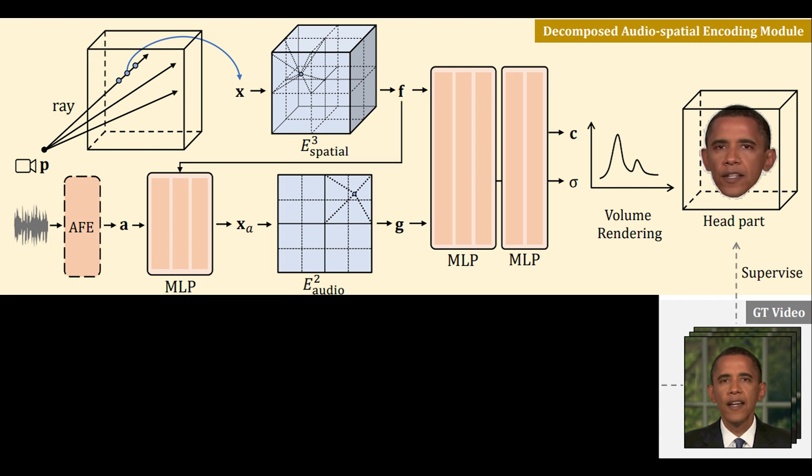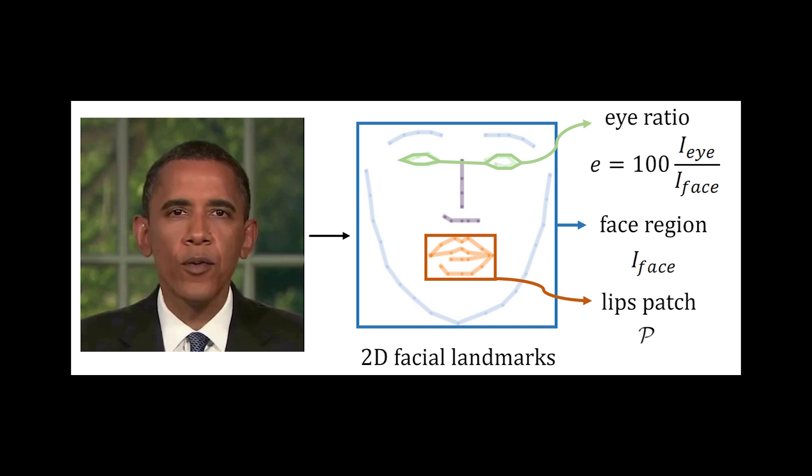This means they never merge the audio data with the spatial data, which would increase the size exponentially, adding two-dimensional inputs to each coordinate. So reducing the size of the audio features, along with keeping the audio and spatial features separate, is what makes the approach so much more efficient. But how can the results be better if they use condensed spaces that have less information?